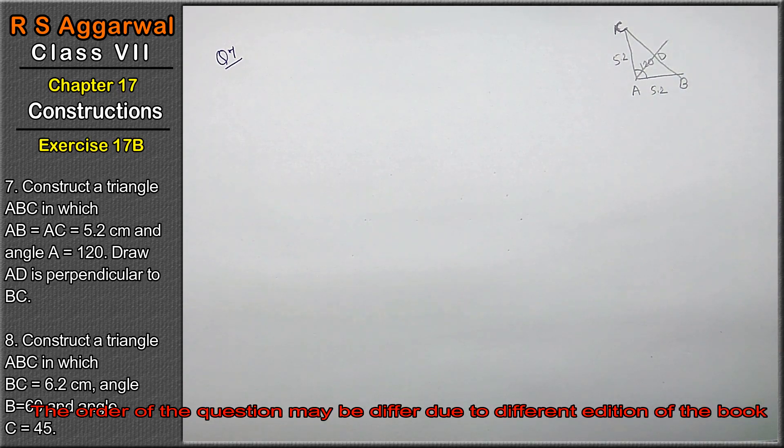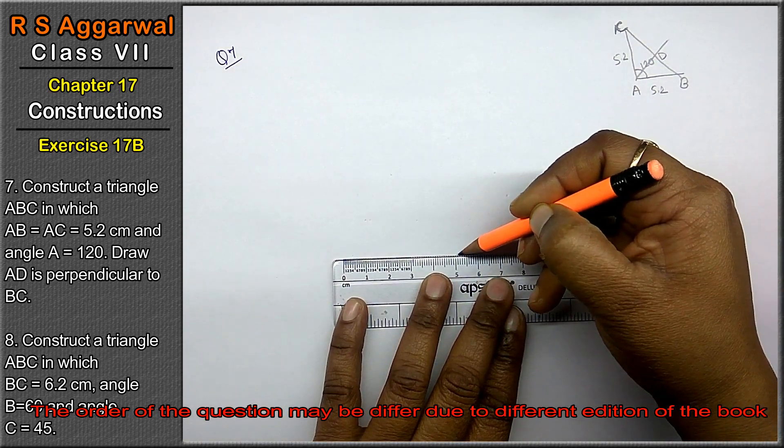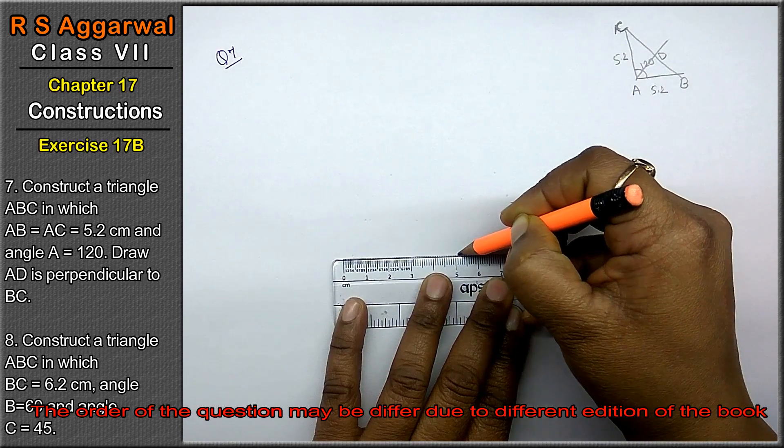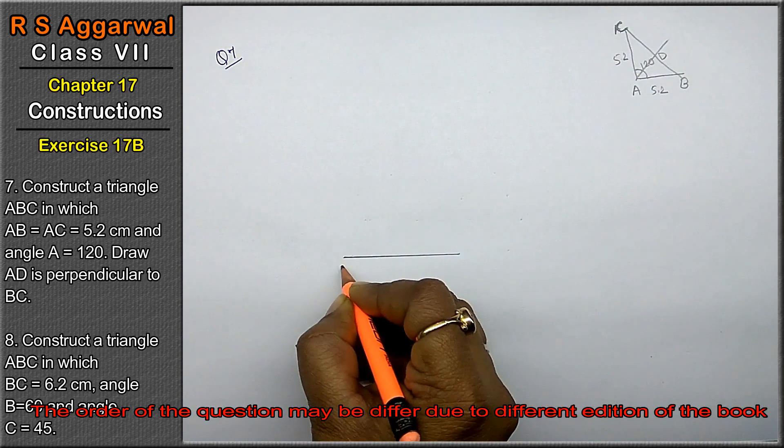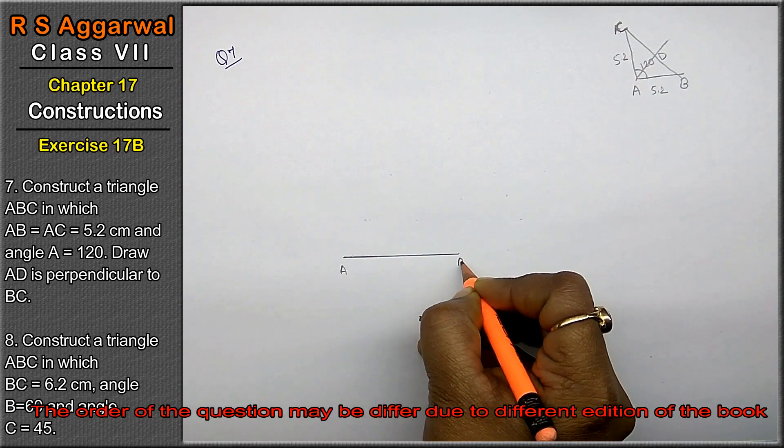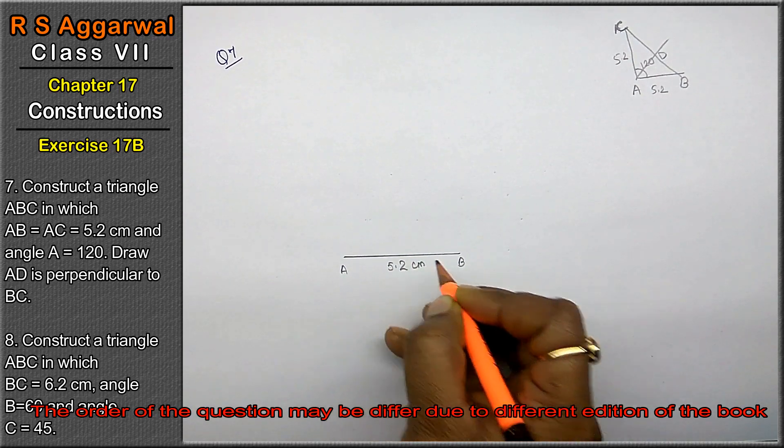Now, let's make a line AB which is 5.2 cm. 5 and it has 2 dots. 5.2. This is AB, 5.2 cm.